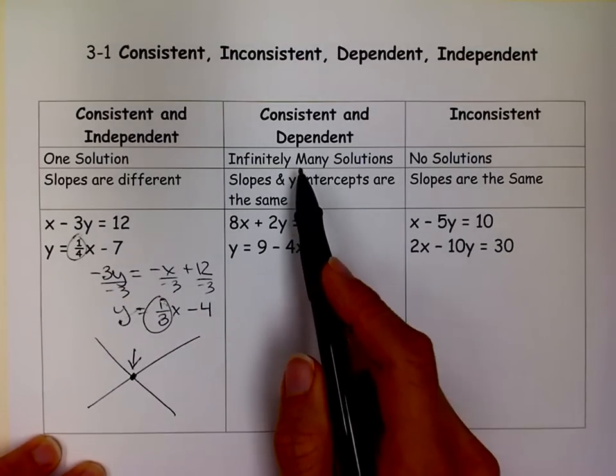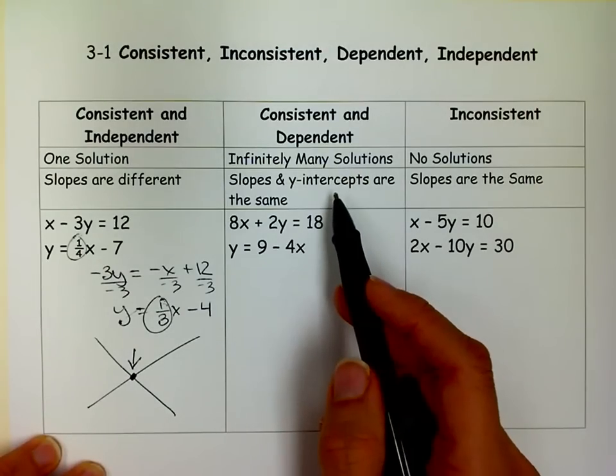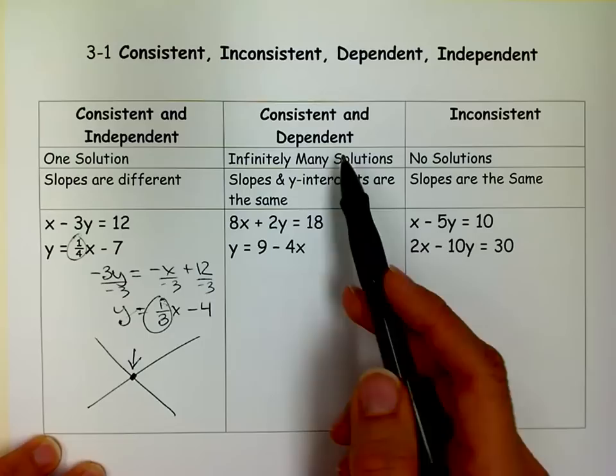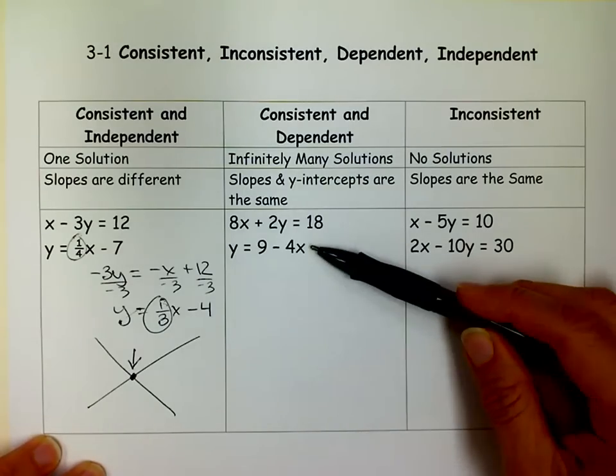So over here, if it's consistent and dependent, basically that means it's the same exact line you're graphing on top of the other. And you can kind of, before I solve for y, I'll show you. You can kind of see that they're the same.